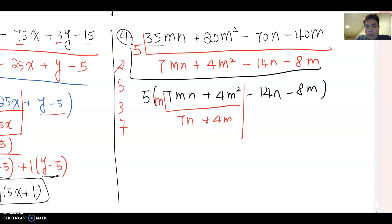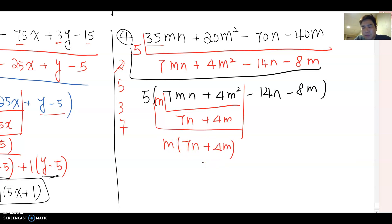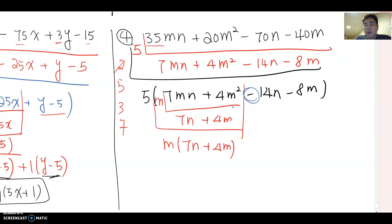Since there's no common factor between 7n and 4m, I write it as m times (7n plus 4m). Now for the second group, notice the leading sign is minus. I emphasize: if you see a minus sign, factor by a negative number. The common factor between 14n and 8m — I see 2, but I factor by negative two instead.